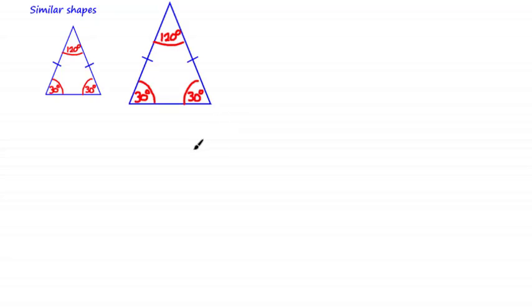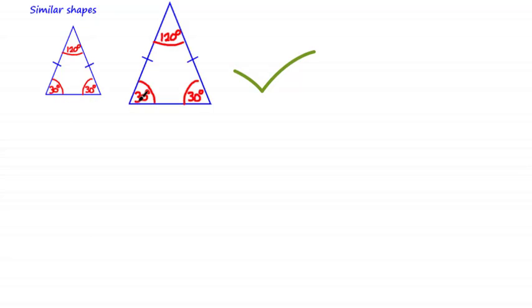Hi guys and welcome to this tutorial about similar shapes. Two shapes are similar if one shape is an enlargement of the other shape. Here is an example of two shapes that are similar. Although one shape is clearly larger than the other, these would be seen as similar because all of the corresponding angles are the same. For example, comparing these two angles, they're both equal to 120 degrees; comparing these two angles, they're both equal to 30 degrees.